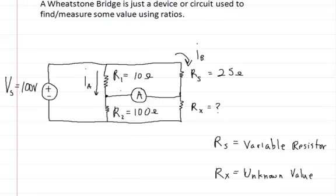And you're going to use that to solve for Rx. And then when there's no current flowing through here, you're going to take the value that you put into the variable resistor, and you're going to use that to solve for Rx.